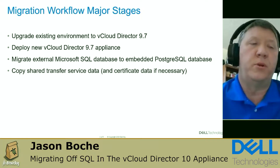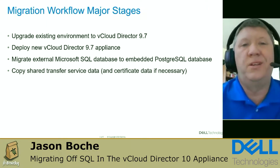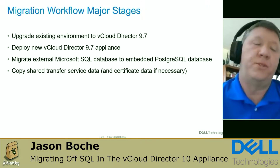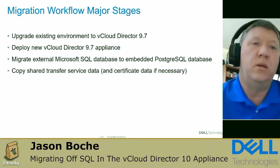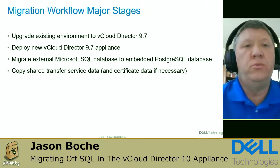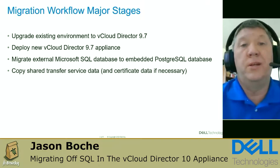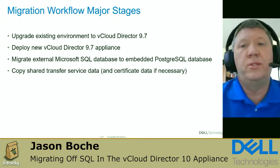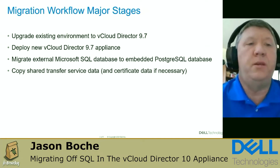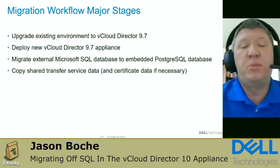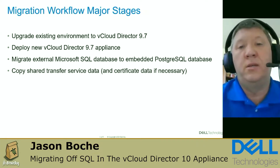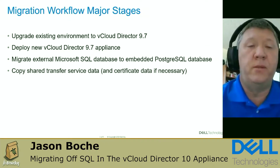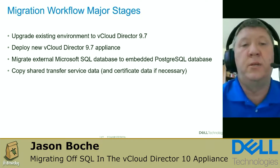It boils down to four major steps, which you can see on the screen. Stage one is to upgrade the existing environment to vCloud Director 9.7 — VMware requires us to be on the same exact version before making the jump to the new appliance. Stage two is to deploy the new vCloud Director 9.7 appliance. Stage three is to migrate the SQL backend database to PostgreSQL. Stage four is to copy any shared transfer service data and, optionally, migrate certificates. I do not demonstrate certificate migration in this video, although that is a fairly easy and well-documented step.